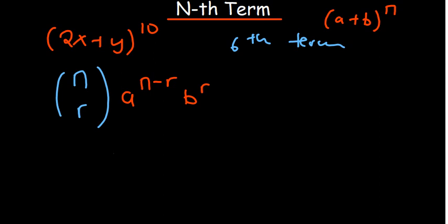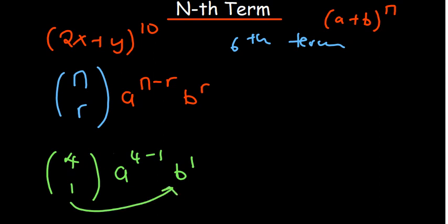Let me give you a concrete example. For n=4 and r=1, the expansion gives you a to the power 4 minus 1, and then b to the power 1. So the b part matches up with r, and the a part is the difference of the two. That should help you remember the pattern.